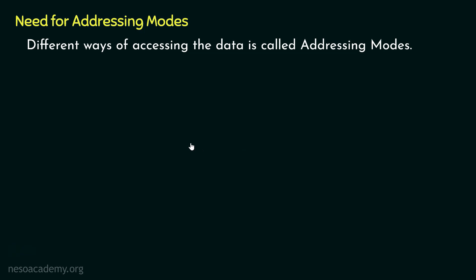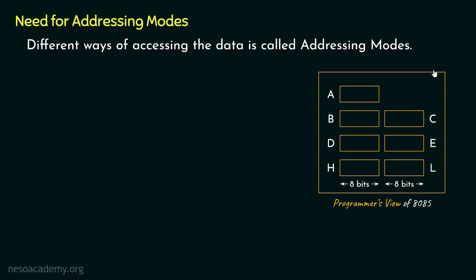Now in case of 8085, let me show you how the different addressing modes work. Now we already know within the programmer's view, we have got the GPRs and we also have the accumulator register. Say we would like to access the accumulator register and update that. For this, I am going to use some instructions as an example. If we execute the instruction MVI A,12H — it sends the data immediately to the accumulator register, that is move immediate. So execution of this particular instruction will lead to the accumulator having the data 12.